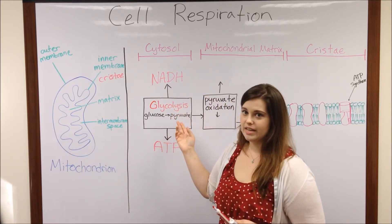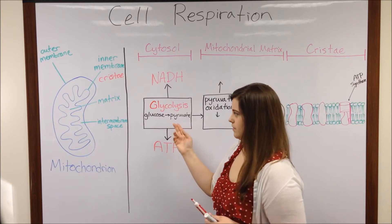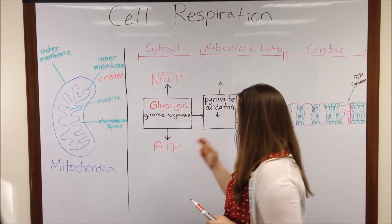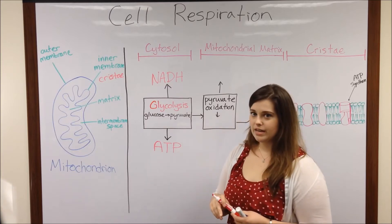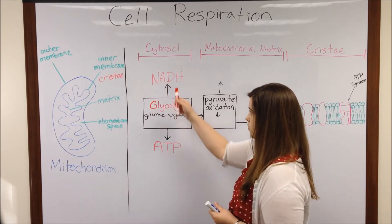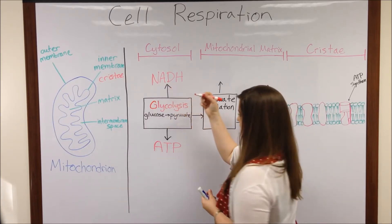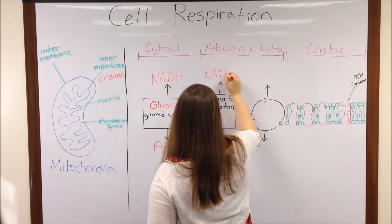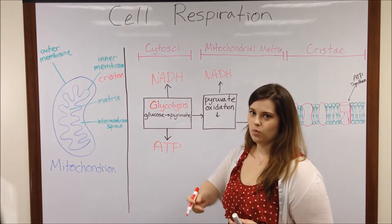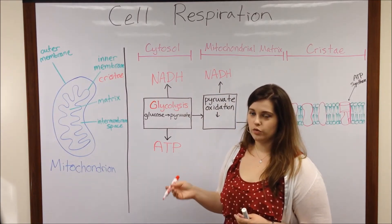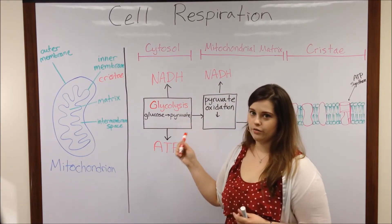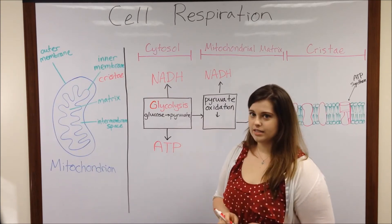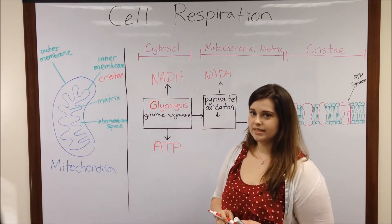Pyruvate moves into the mitochondrion, specifically into the matrix, where it is oxidized. The process of pyruvate oxidation generates another one of these electron carriers, NADH, which is just a way for the cell to remove energy further from pyruvate. The product of pyruvate oxidation is known as acetyl-CoA.